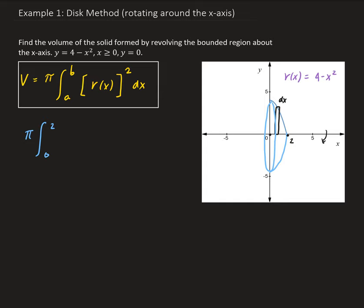So we have pi times the integral from 0 to 2 of 4 minus x squared, squared.